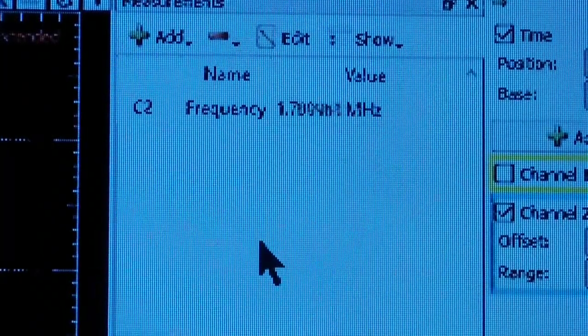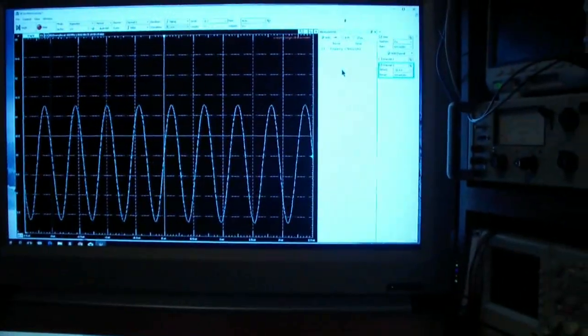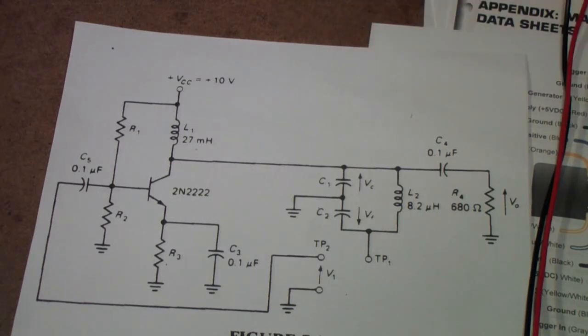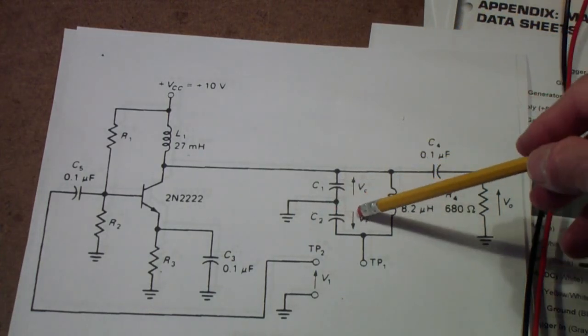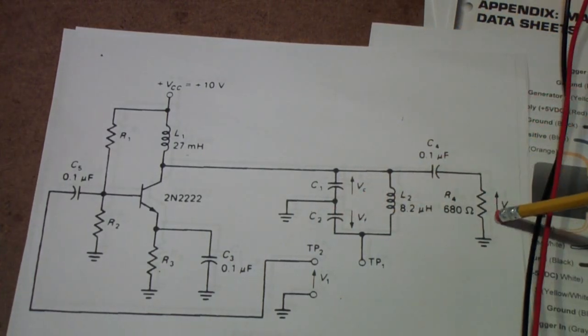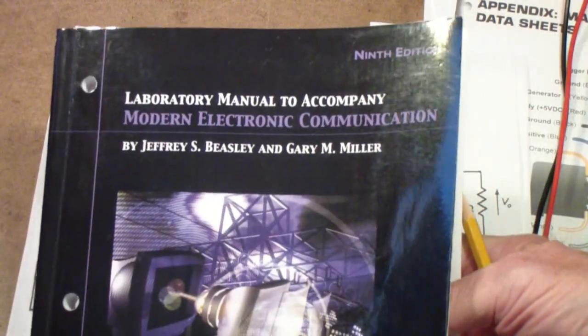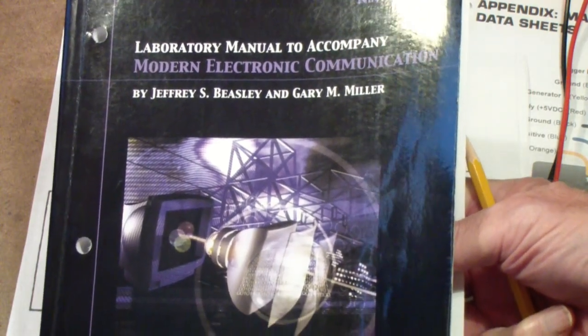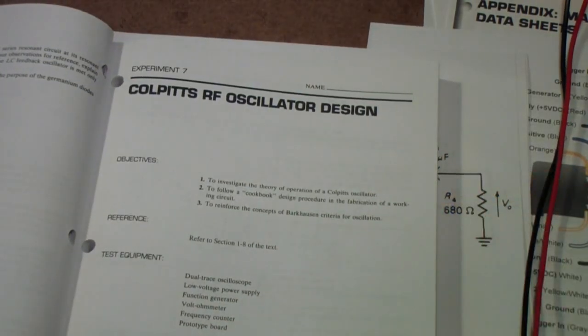The circuit that is actually being displayed on the screen is a Colpitt's oscillator. You'll notice it's a rather simple circuit consisting of a transistor, a bias network, a tuned circuit, and an output load. This particular circuit comes out of the Laboratory Manual to Accompany Modern Electronic Communication by Beasley and Miller. This particular experiment is experiment number seven for a Colpitt's RF oscillator design.